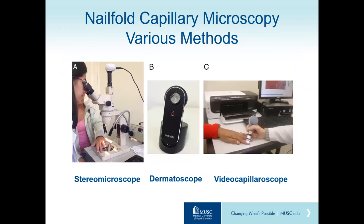Nail-fold capillary abnormalities may be detected in a number of different ways. A stereomicroscope is used at MUSC to look at the capillaries present just before the cuticle on each fingernail. Many institutions use a dermatoscope, which can also visualize these small blood vessels. The most sophisticated method is a video capillaroscope, which takes incredibly detailed pictures of the capillaries.